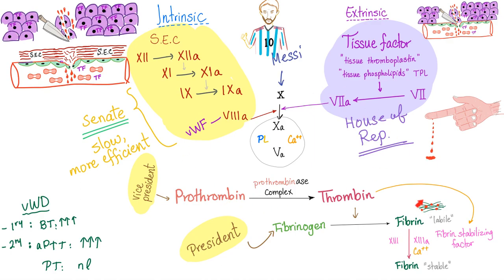The coagulation cascade is best understood starting from the bottom and going upward. Fibrin is the goal — that's why we call it a fibrin thrombus. Stabilize the fibrin using factor 13. Fibrin came from fibrinogen. Thrombin, the protein of thrombus, came from prothrombin. To go from prothrombin to thrombin you need a complex of four substances: factors 5 and 10, calcium, and phospholipid. Then you have two stories to activate factor 10: the extrinsic and the intrinsic pathway.